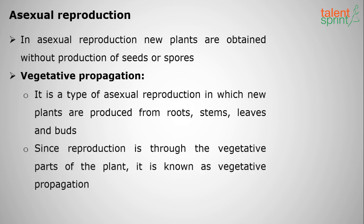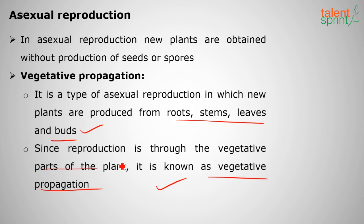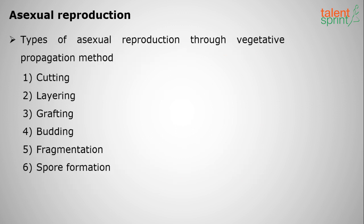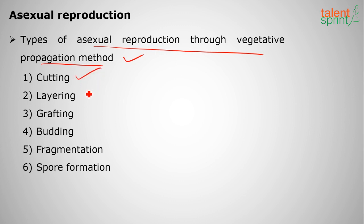The vegetative parts of a plant — roots, stems, leaves, and buds — can participate in reproduction. This type of reproduction is called vegetative propagation. In this type, new plants are formed without the production of seeds or spores; only vegetative parts like roots, stems, leaves, and buds are involved. The methods of vegetative propagation include cutting, layering, grafting, budding, fragmentation, and spore formation.